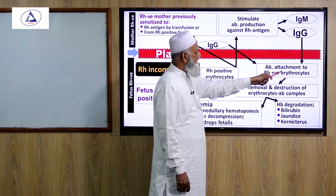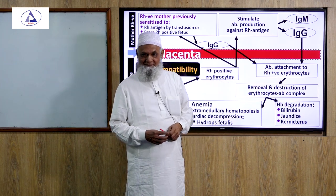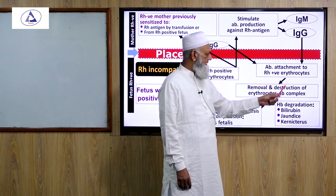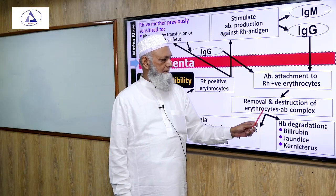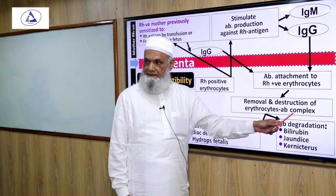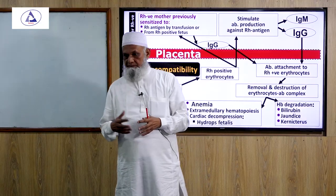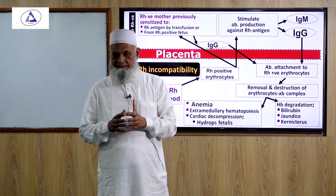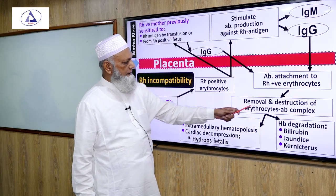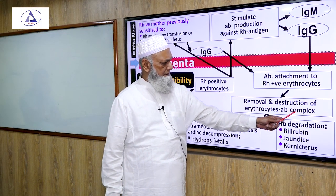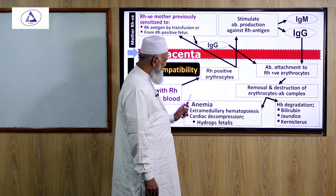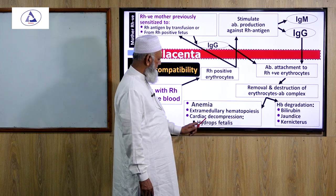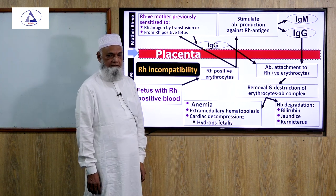Antibody in the fetal blood attaches to Rh positive erythrocytes of the fetus, leading to removal and destruction of the erythrocyte-antibody complex. This occurs via complement-mediated lysis and erythrophagocytosis in the spleen, resulting in intravascular hemolysis and extravascular hemolysis.